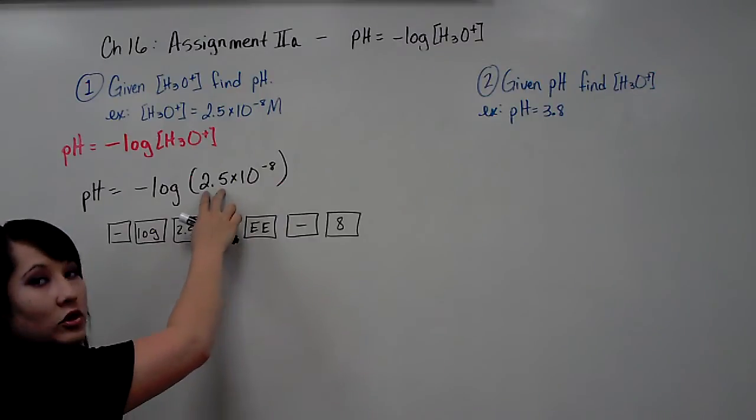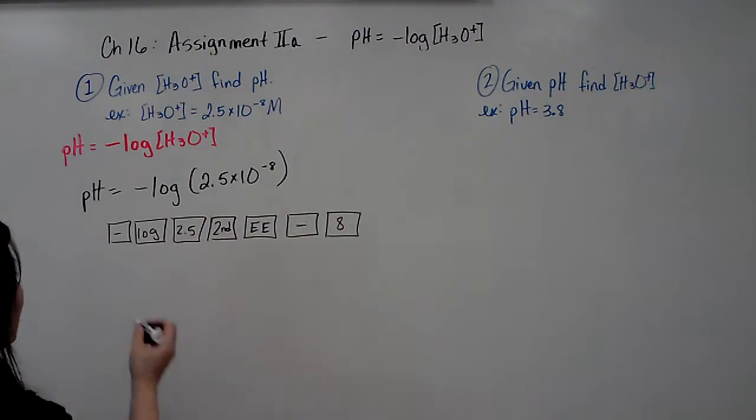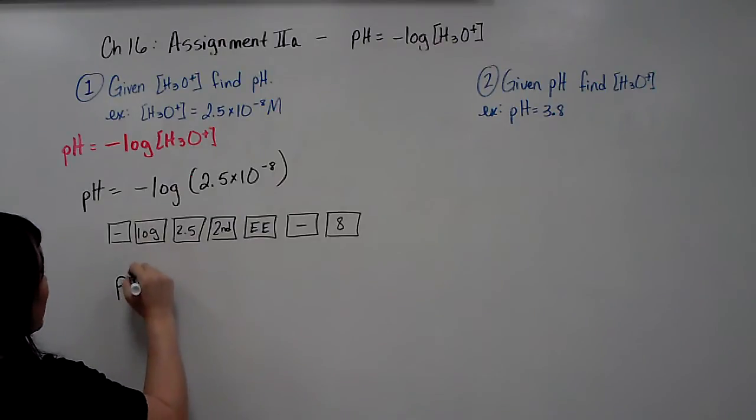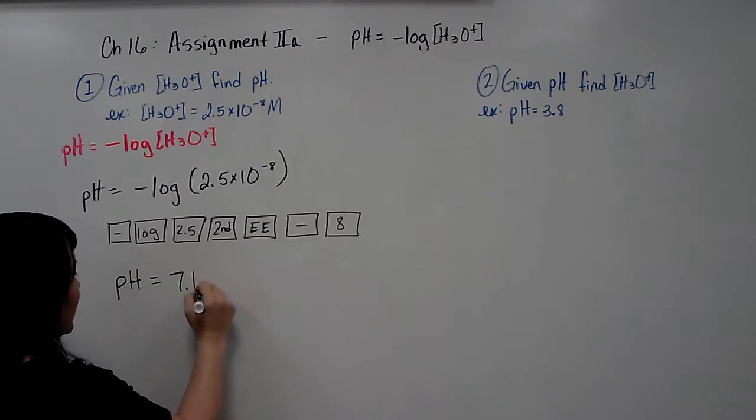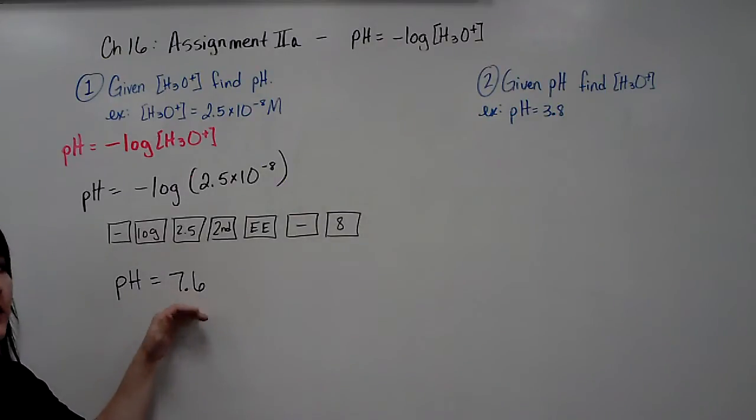Notice your coefficient here has two sig figs, so you're going to round off your pH to two sig figs. So the pH equals 7.6, and you can see that this is relatively neutral, just barely in the basic range of this particular solution.